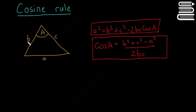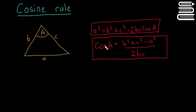Otherwise, if we have all three sides b, c, and a, we can use the cosine rule rearranged to find an angle. If you have all three sides you can find all three angles just by applying this three times. Note that the rearranged form isn't in the tables book, so you have to be able to rearrange it yourself.